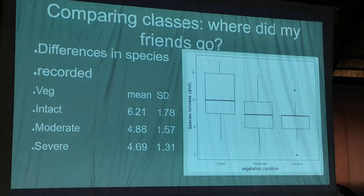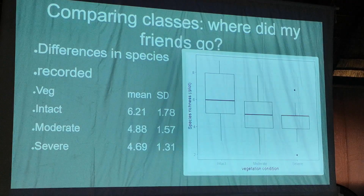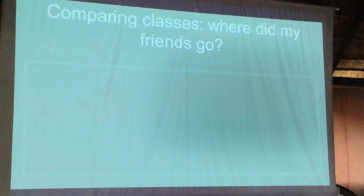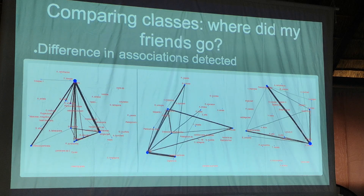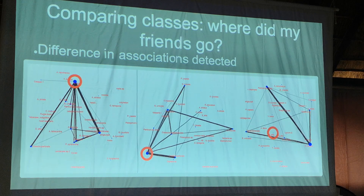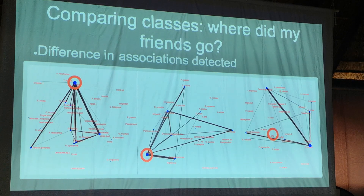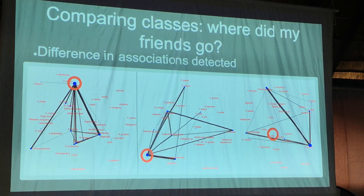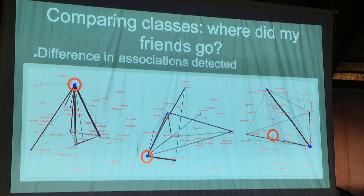Looking at where our friends went: there's a clear loss in species as degradation happens, but then it kind of balances out from moderately to severely degraded. Spec boom is really important in intact thicket, still really important in moderately degraded thicket, but relatively insignificant - not there - in severely degraded systems. So reintroducing spec boom is fundamentally reintroducing one of the anchors of the plant community in these succulent thicket ecosystems.